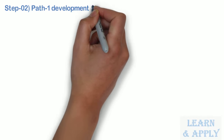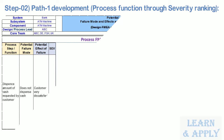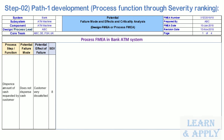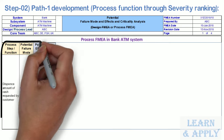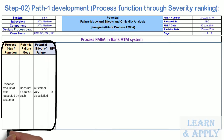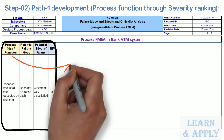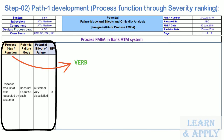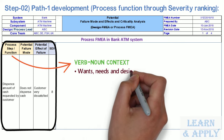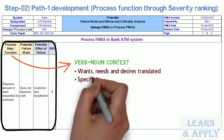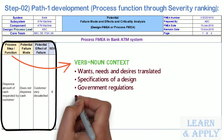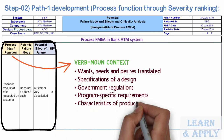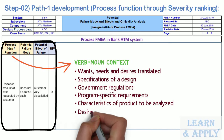Step 2: Path 1 development — process function through severity ranking. Path 1 consists of inserting the functions, failure modes, effects of failure, and severity rankings. The pre-work documents assist in populating the first few columns of the FMEA. Functions should be written in verb-noun context, and each function must have an associated measurable. Functions may include wants, needs, and desires translated into specifications of a design, government regulations, program-specific requirements, characteristics of a product to be analyzed, and desired process outputs.